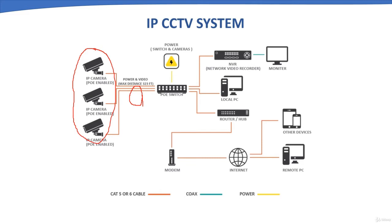To power IP CCTV cameras, a PoE switch is generally used, which both powers the cameras and carries the data over a single CAT5 or CAT6 cable. The Network Video Recorder further processes and compresses the received data, then stores it on a hard disk drive or network-attached storage. For live view or playback, a monitor may be connected directly to the NVR, or a workstation with VMS — Video Management Software — is used.